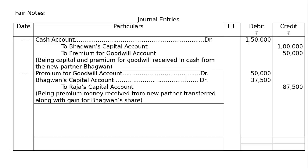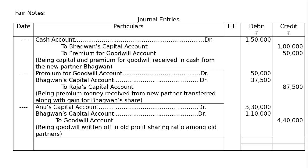The last entry: Goodwill is already appearing in the books at Rs. 4,40,000. Hence, it will be written off to old partners' capital accounts in old ratio. Anu's Capital Account debited Rs. 3,30,000, Bhagwan's Capital Account debited Rs. 1,10,000, to Goodwill Account Rs. 4,40,000. Being goodwill written off in old profit-sharing ratio among old partners. The totaling of both sides will be Rs. 6,77,000. This is the final answer.